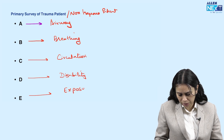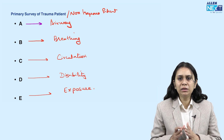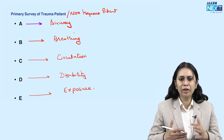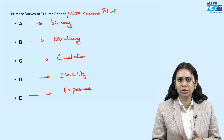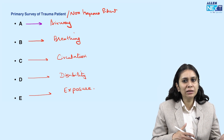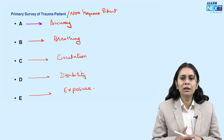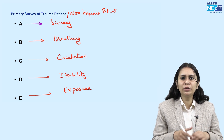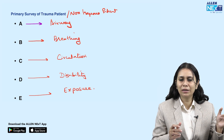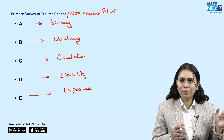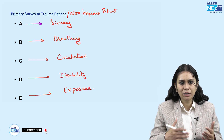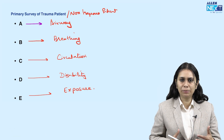Remember: if the person is conscious, we use the A, B, C, D, E approach — airway, breathing, circulation, disability, and exposure. If the patient is unconscious and in cardiac arrest, the approach is C, A, B — we start with chest compressions first. But if the patient is conscious and not in cardiac arrest, the approach is A, B, C, D, E.